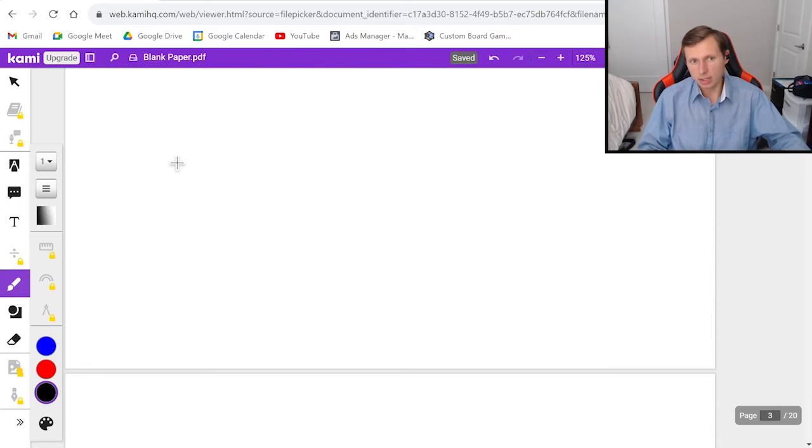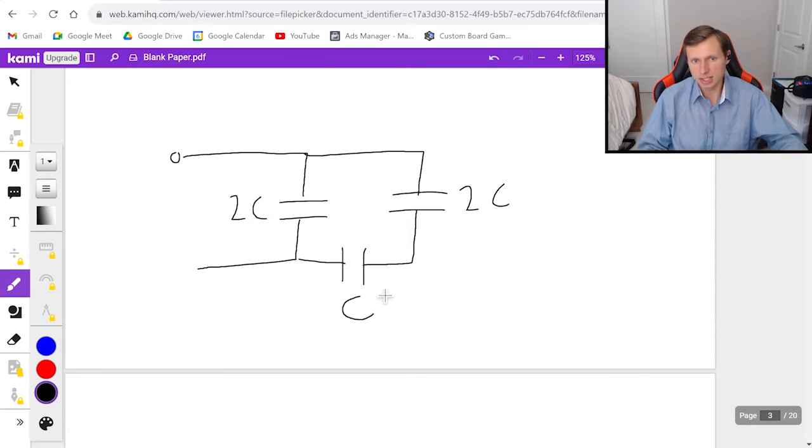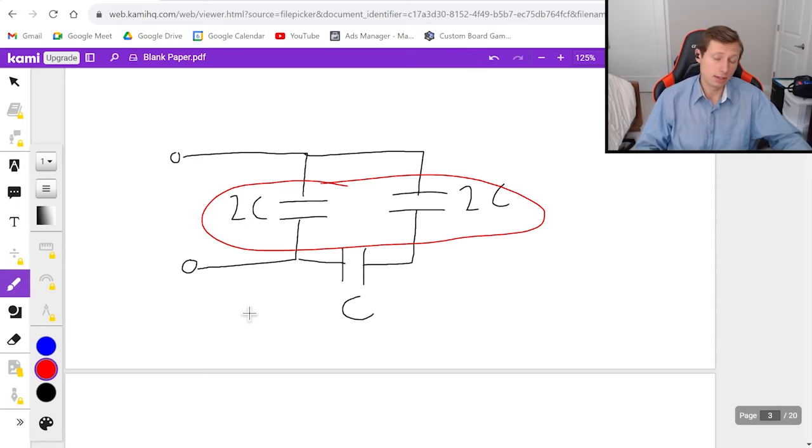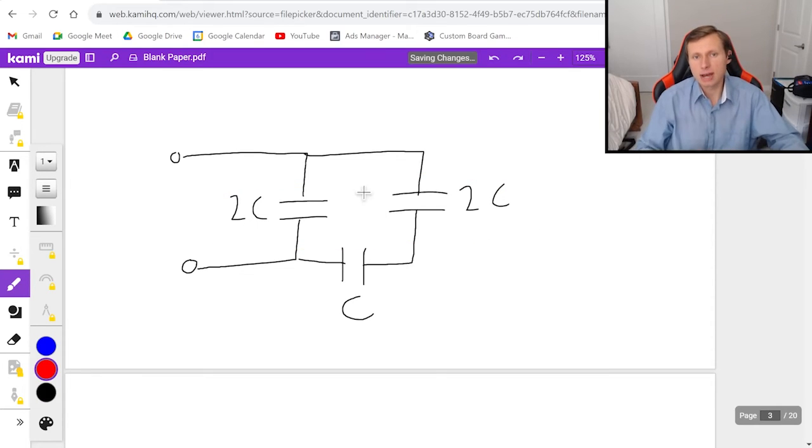So now if I redraw it, it looks something like this. One capacitor here, one capacitor here, one capacitor in the middle there. This one's 2C, this one's 2C, and this is just C. Now the challenge question for you: which two capacitors will I add next? If you said these two in parallel you would be incorrect because first you have to add these two which are in series.